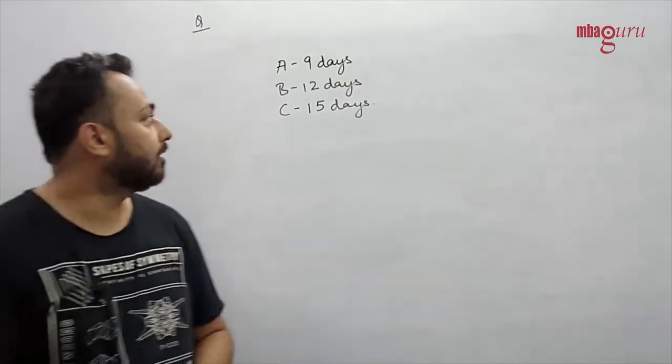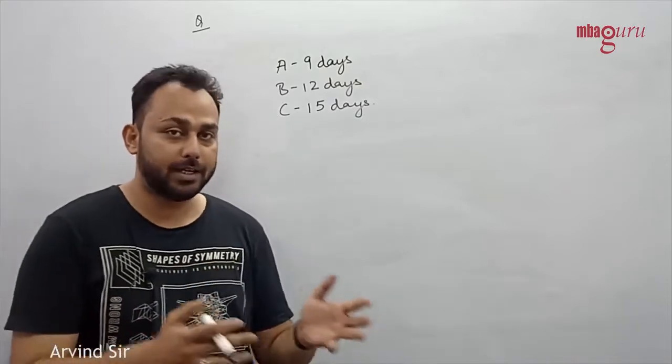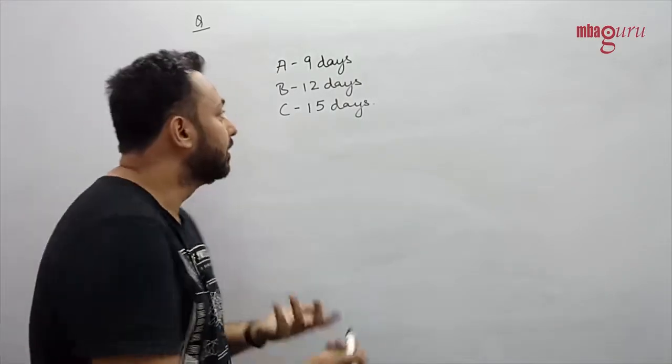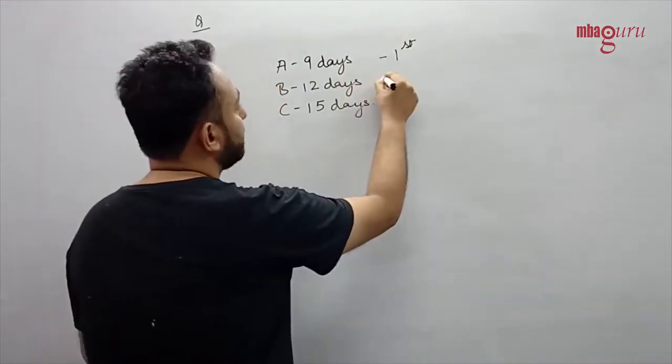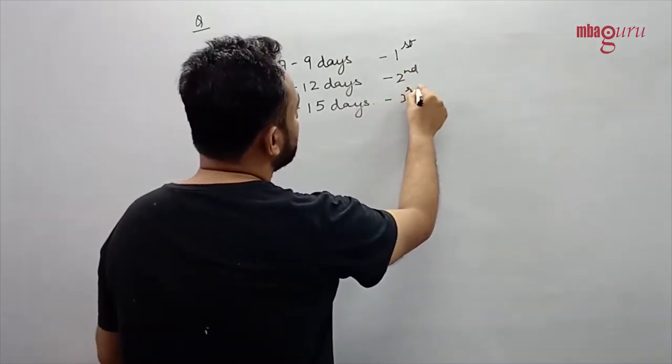This is another time and work question where we get told A can complete a piece of task in 9 days, B can do it in 12 days, C can do it in 15 days. And they work in a sequential fashion where in the first day only A works, the second day only B works, and the third day only C works.